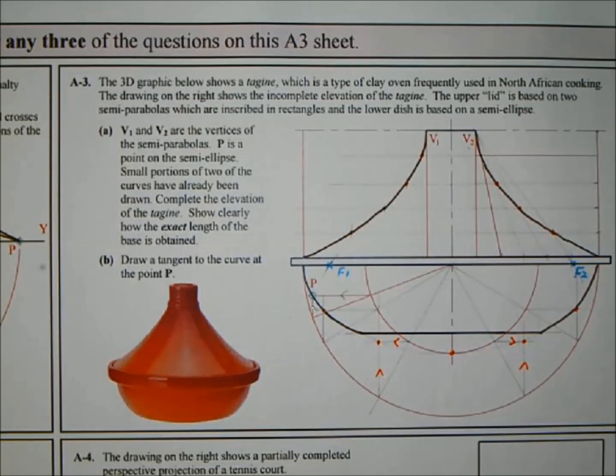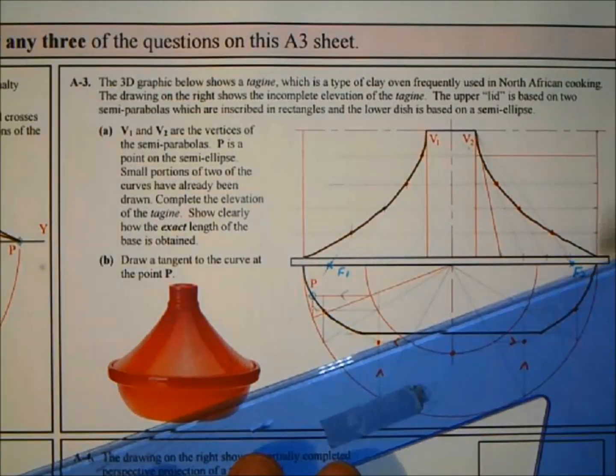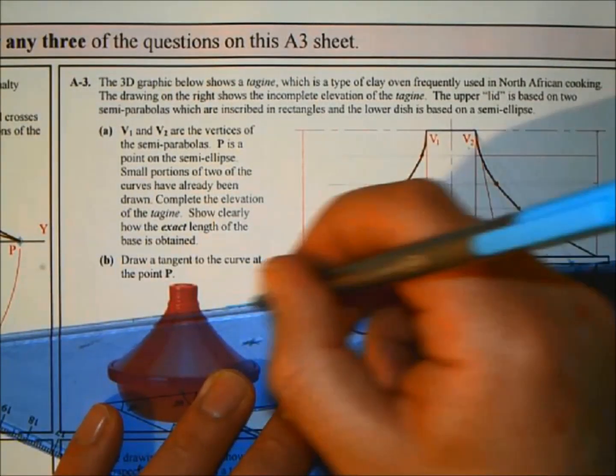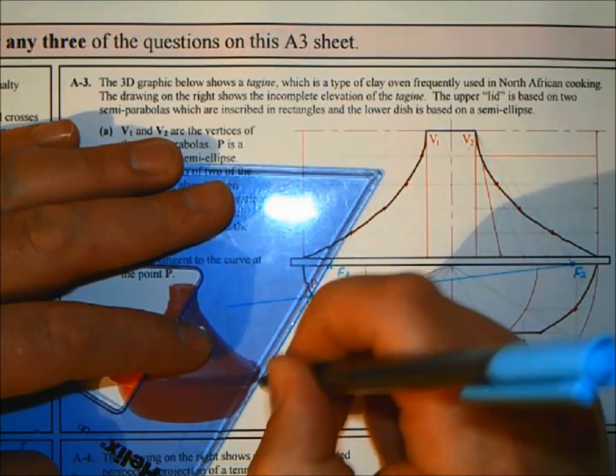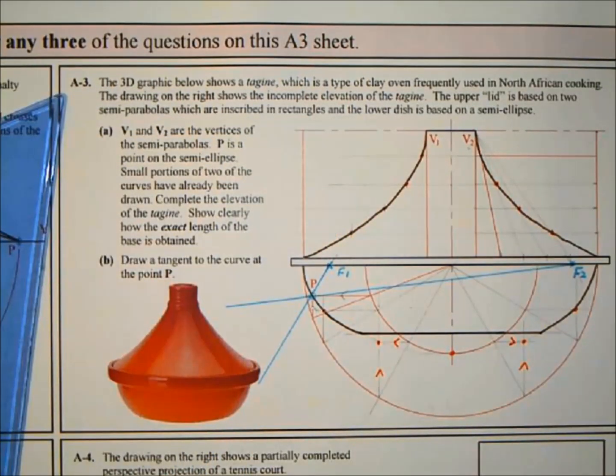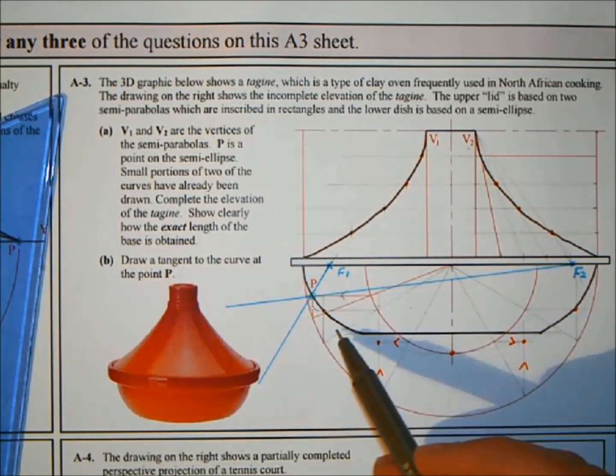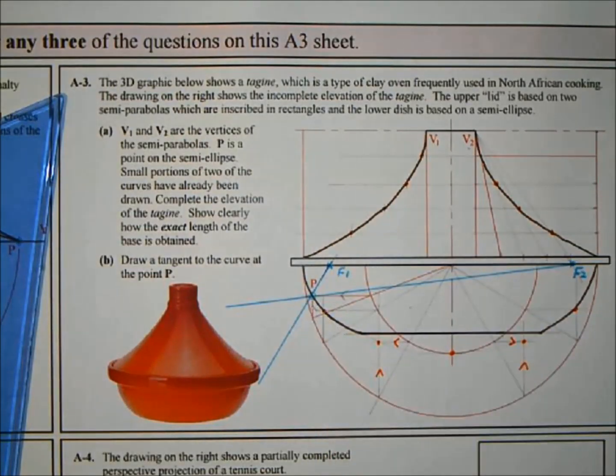Next step, you join those focal points to the point of contact. I'm just going to join them in here with a marker just so they stand out. What you end up with is these angles made by those two lines. What we want is a tangent to point P.